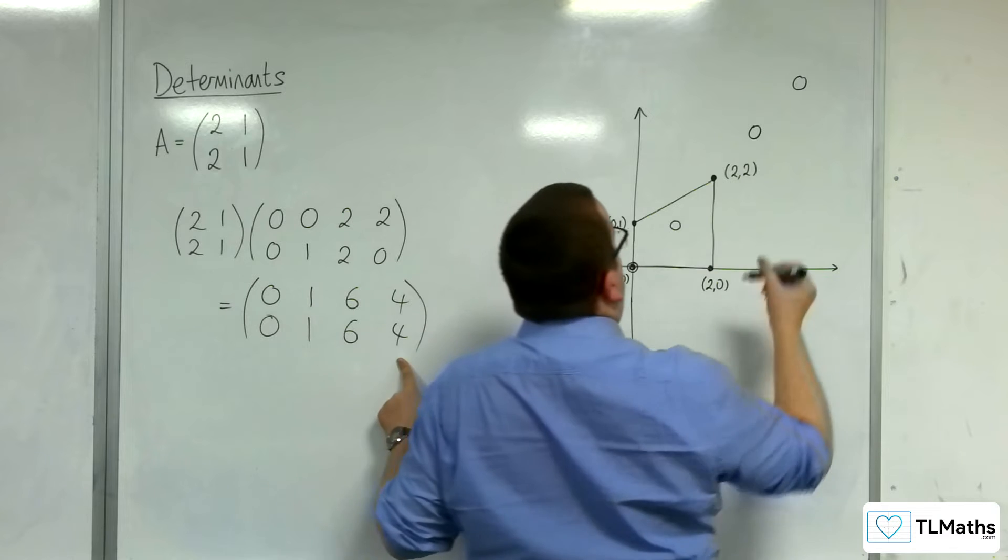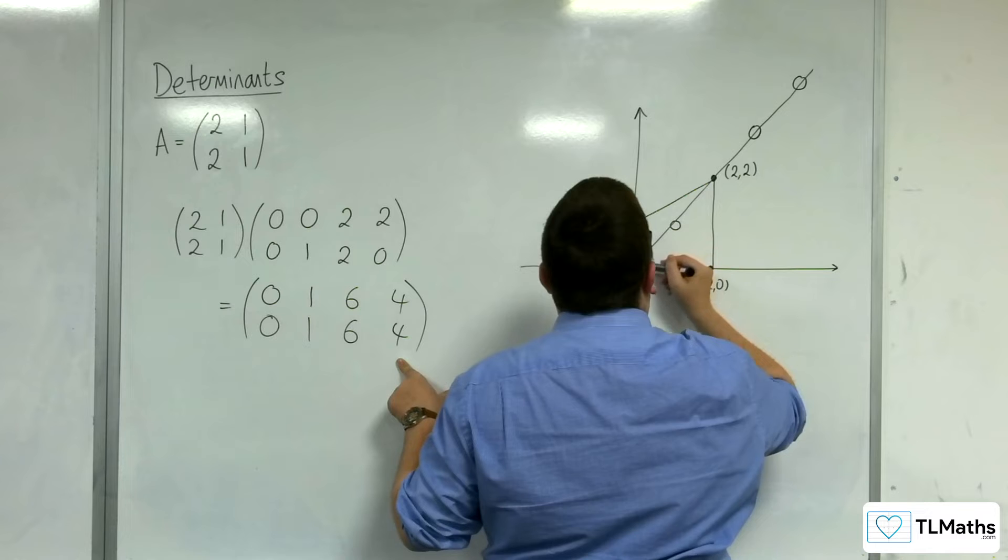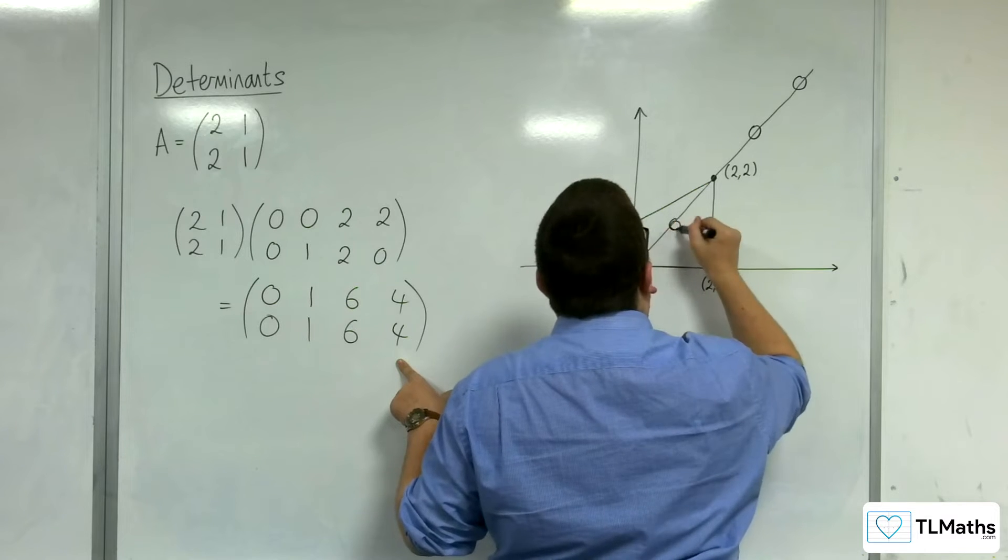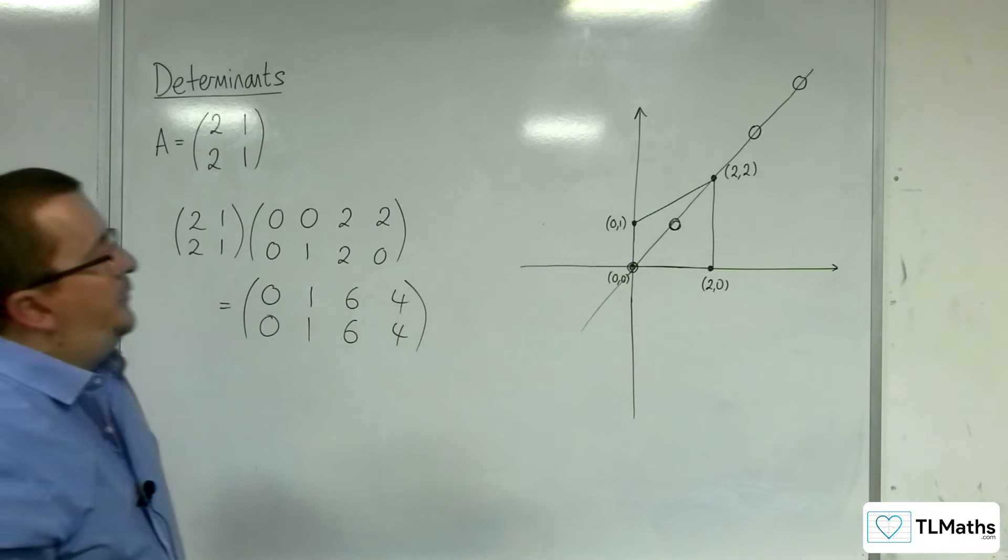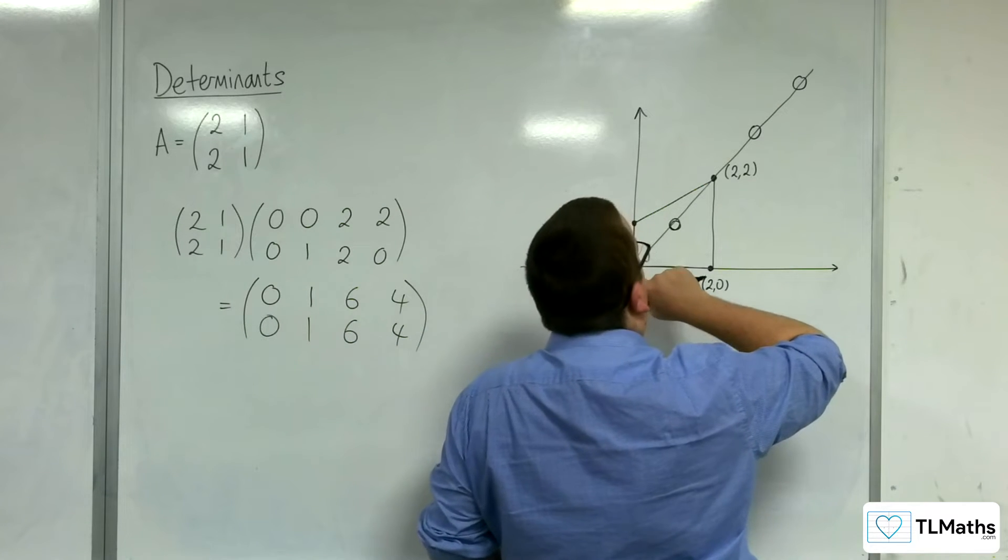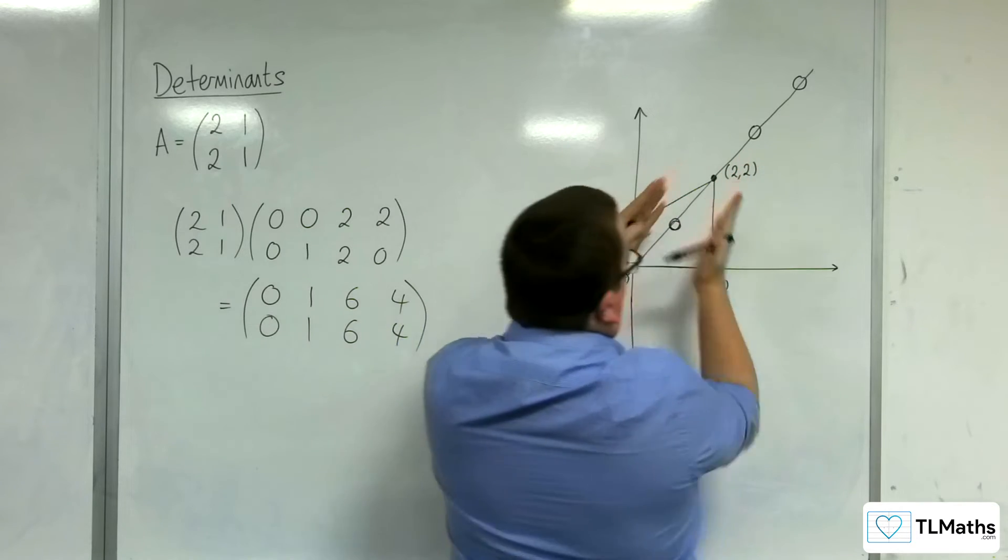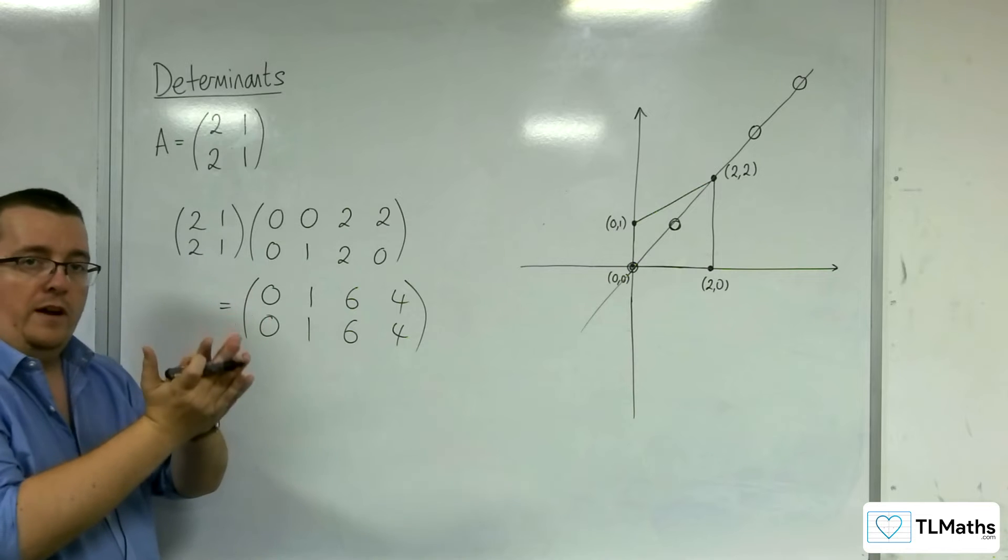So actually, all four of those points have actually been mapped onto a single line. And so, what we can actually see is that this shape has been squashed down, and so it is all on a single line now.